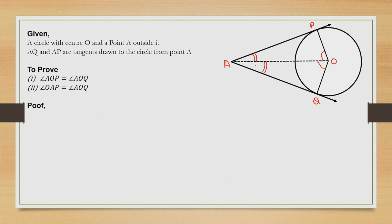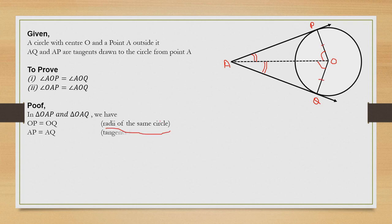Now focus on triangles OAP and OAQ. First, the length OP is equal to OQ because they are radii of the same circle. Second, AP is equal to AQ because the lengths of tangents drawn from an external point to a circle are equal.